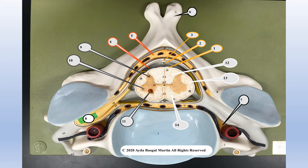Now we will discuss some features of the spinal cord on the models. When we look at these vertebrae, we see the bony vertebrae. Number six shows a bifid spinous process and number seven shows a foramen on the transverse processes. These two landmarks give us a clue that this is a cervical vertebra, and because of that you can see the spinal cord segment here is a cervical segment.